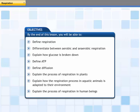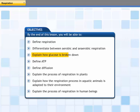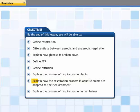This lesson is about the process of respiration. By the end of this lesson you will be able to: define respiration, differentiate between aerobic and anaerobic respiration, explain how glucose is broken down, define ATP, define diffusion, explain the process of respiration in plants, explain how the respiration process in aquatic animals is adapted to their environment, and explain the process of respiration in human beings.